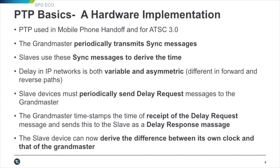PTP basics: it's a hardware implementation. It's been used for years for mobile phone handoffs, and will also be used for ATSC 3.0. The grandmaster periodically transmits sync messages to the network, and the slaves use these sync messages to derive their time. Delay in IP networks is both variable and asymmetrical — different in both directions, not consistent. The slave device must periodically send a delay message to the grandmaster. The grandmaster timestamps the receipt of the delay message and sends back a delay response message.